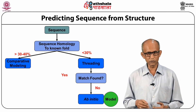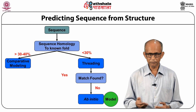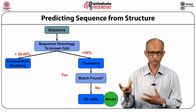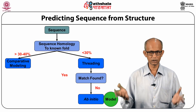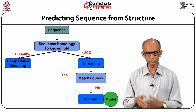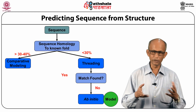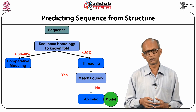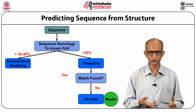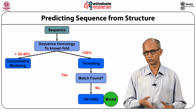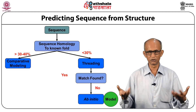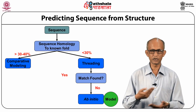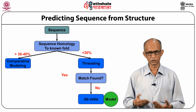If we do not have even about 30% identity between target and template sequences, then homology model methods are not going to be accurate. In such cases, we can try threading methods — if we can find a matching fold, we can at least have some idea of the fold of the protein. And if even that cannot be found, as a last resort we have ab initio folding methods, where we do not use any known experimental information but try to predict the structure from scratch.